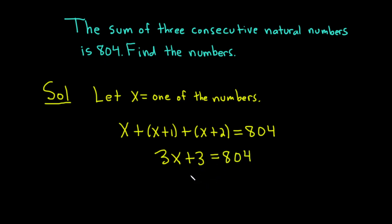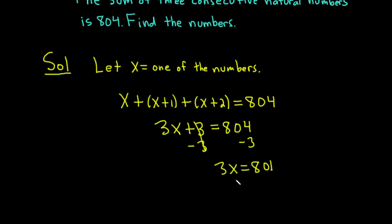To solve for x, we subtract 3 from both sides. We end up with 3x equals 801. Now to solve for x, we divide by 3.